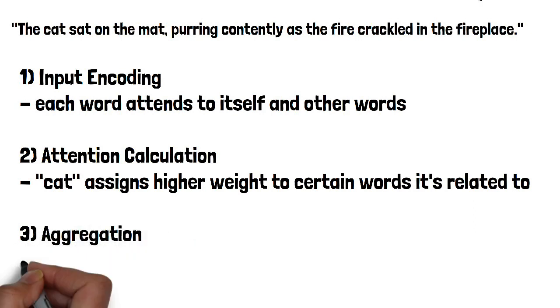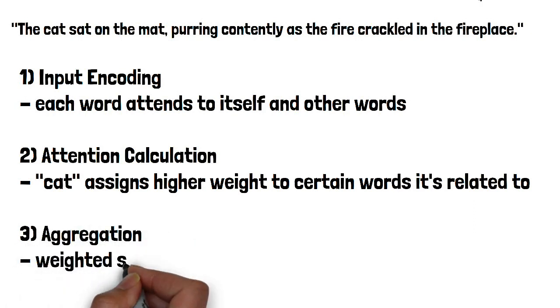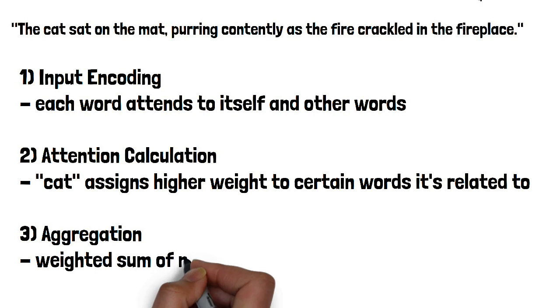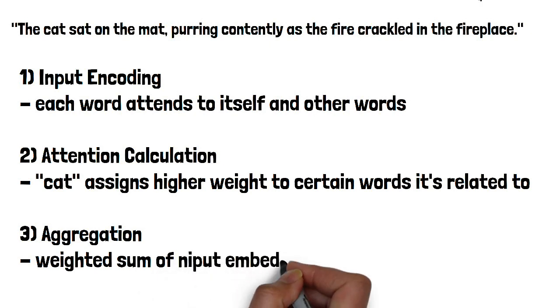Third, aggregation: the attention weights are used to calculate a weighted sum of the input embeddings, considering the contribution of each word based on the attention weights. With self-attention, Alex's machine could now dig deeper into the structure of the input sentence — capturing the nuances of language, identifying dependencies between words, and generating responses that truly reflected the context and relationships within the text.